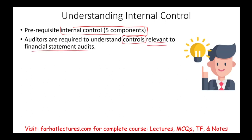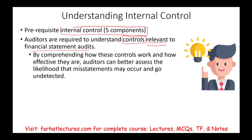Why? By understanding these controls — once auditors know how the controls work and how effective or not effective they are — the auditor can better assess the likelihood of a misstatement that could go undetected. Simply put, once we understand internal control, we can predict and assess the likelihood, the probability, that a misstatement will occur in the financial system.